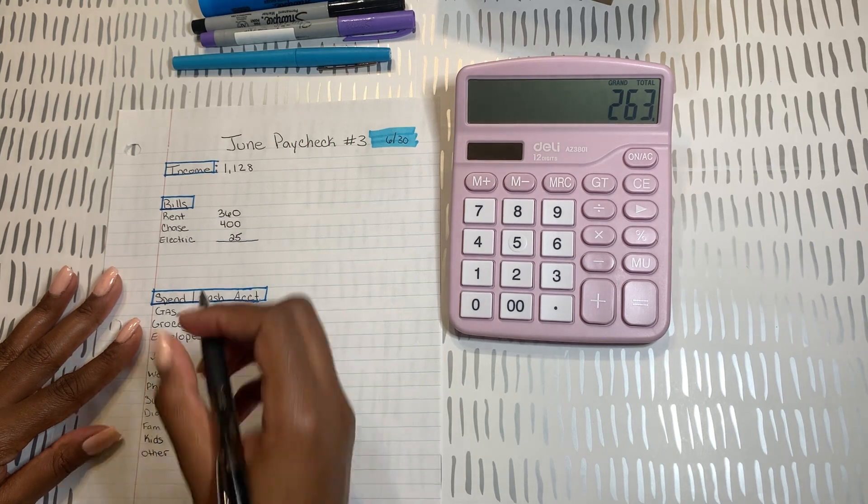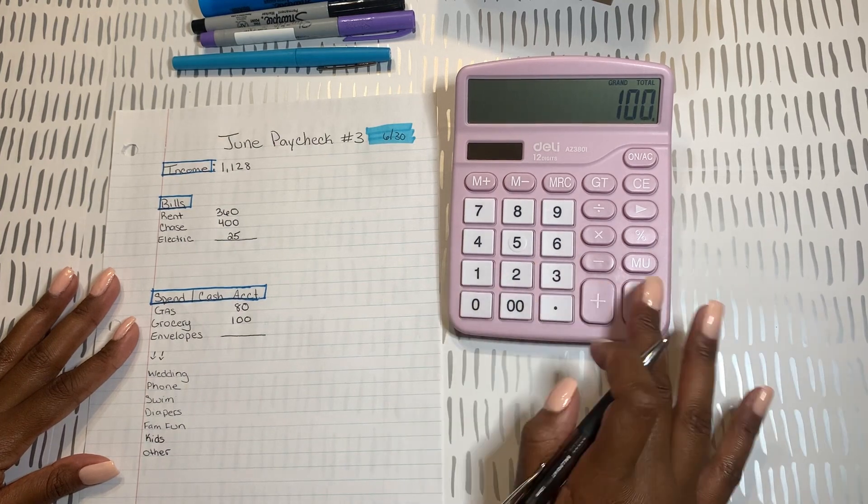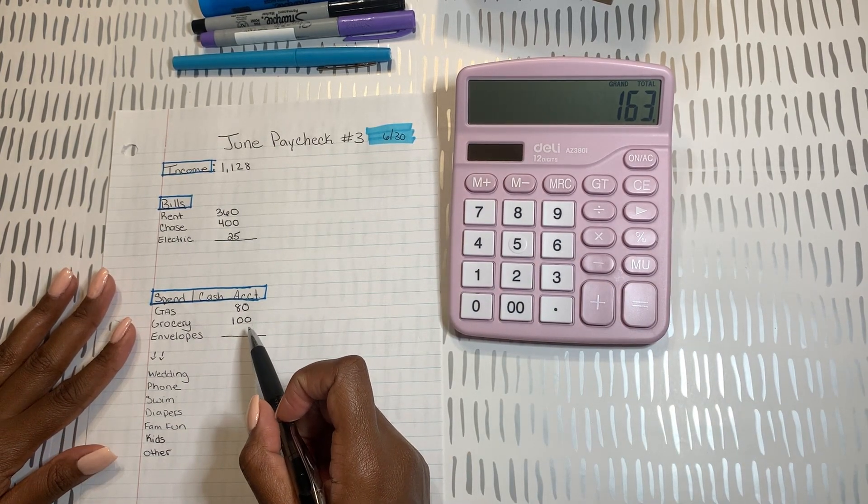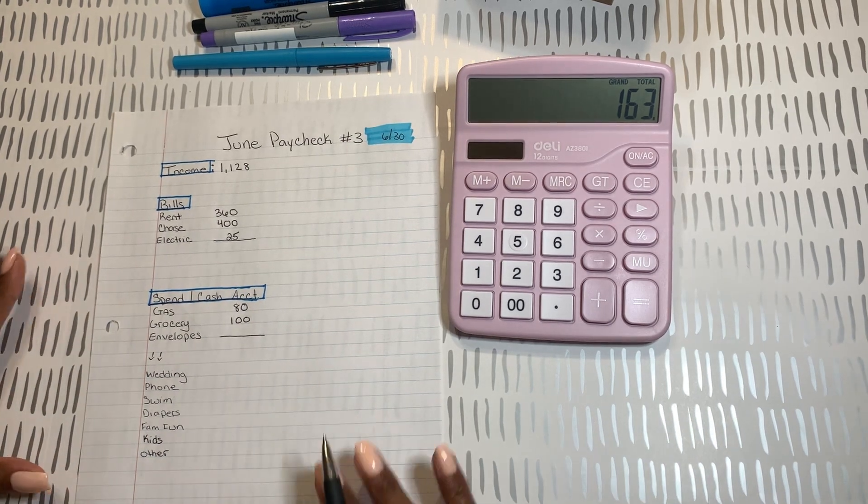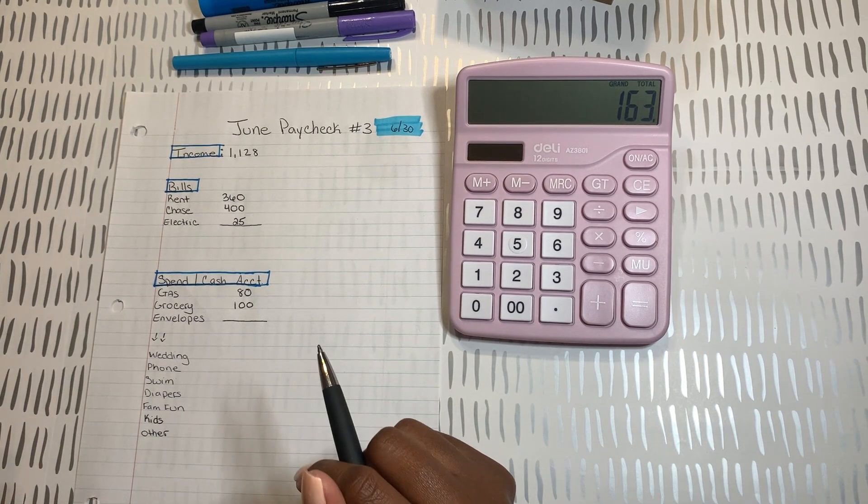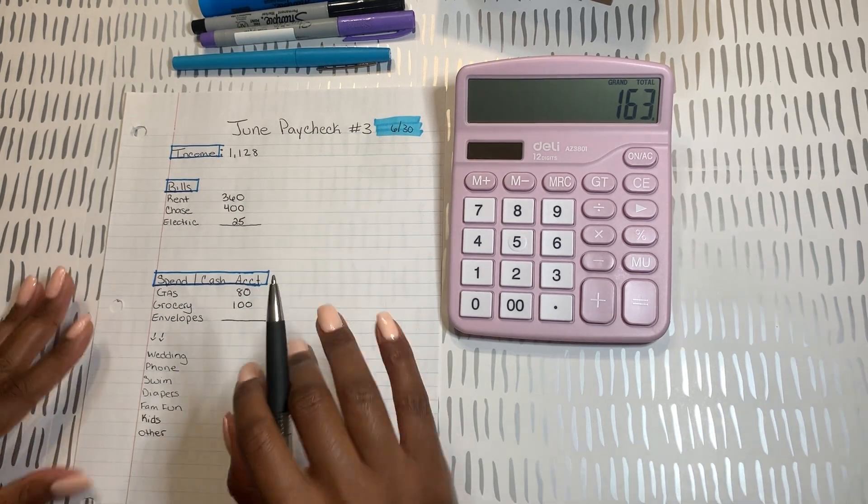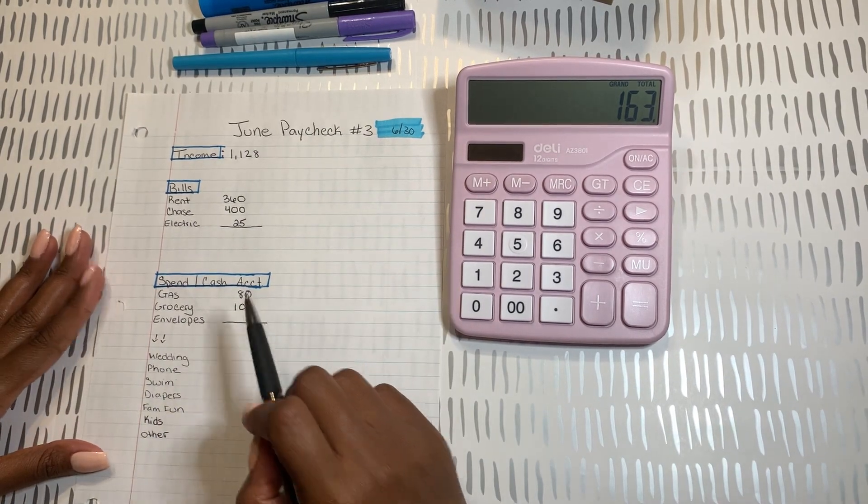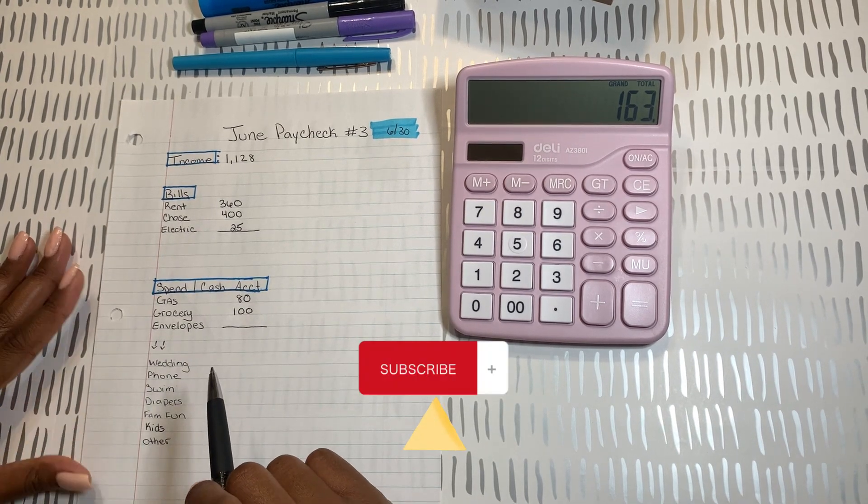I also have groceries. I'm going to leave that at $100. My husband is mostly doing groceries for this week, but I'm still going to stuff my $100 just for extra. Again, we have a teenage son and he is out of school and he is playing sports, so he's snacking, he's eating, he's drinking, he's doing all of the things that's taking up all the food. So I'm still going to stuff that $100 even though this week my husband is paying for groceries.